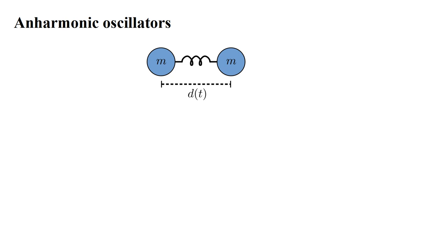The harmonic oscillator has played a central role in many of our heat capacity models. But modeling atoms joined by chemical bonds as masses connected by ideal springs might be too simplistic. So, let's consider so-called anharmonic oscillators. Let's first review our classical model of a homogeneous diatomic molecule. We represent this by two equal point masses connected by a spring. Vibration causes the distance between mass centers to be a function of time, d of t. The most problematic aspect of this model is reducing the complexities of a chemical bond to a simple spring.